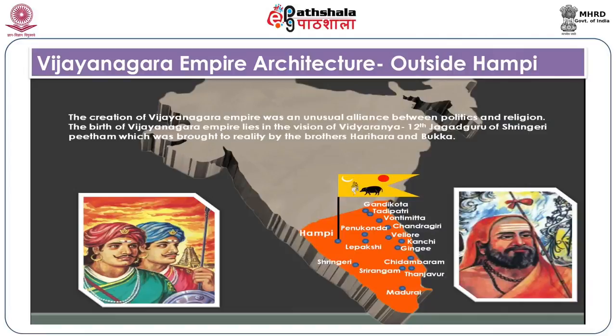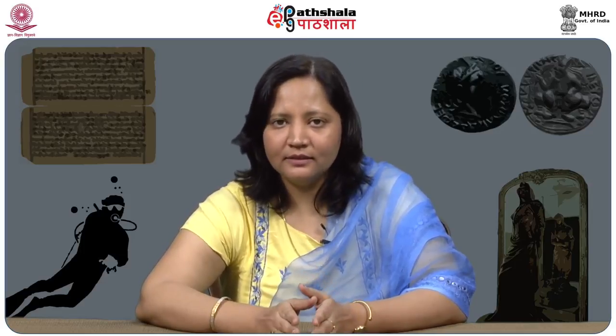As we have already told in the first part, the creation of the Vijayanagara Empire was an unusual alliance between politics and religion. Harihara and Bukharaya, who were treasury chieftains in the Kakatiya Kingdom, were converted and sent back to guard the southern reaches of the Tughlaq Empire. They were convinced by sage Vidyaranya to re-convert to Hinduism, and that is how the Vijayanagara Empire came into existence. The Vijayanagara Empire was not a single dynasty — there were four dynasties who comprised its entire rule.